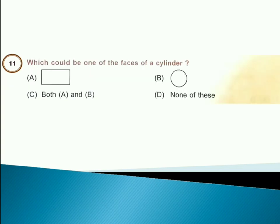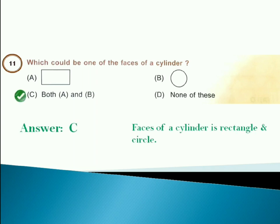Which could be one of the faces of a cylinder? Answer is option C, that is both A and B. Faces of a cylinder is rectangle and circle.